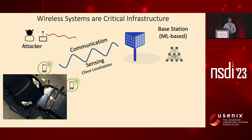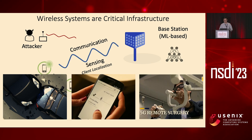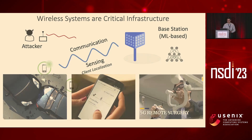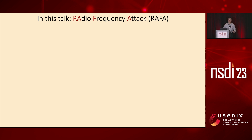We can also apply such attacks on communication domains, which will severely damage communication quality and lead to threats to time-sensitive applications such as 5G remote surgery. While those are critical infrastructures and we cannot afford the consequences of such risks, in this talk I'm going to show you that this risk is actually real. A single-antenna attacker transmitting 20 times less power than the client can disrupt a machine learning-based wireless system completely.